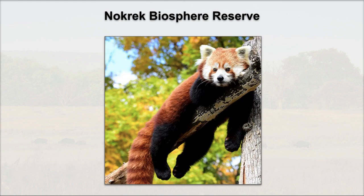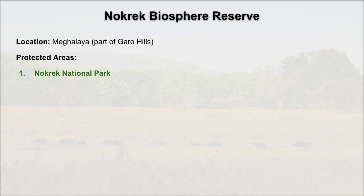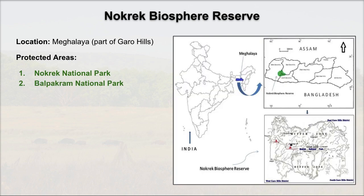Next is Nokrek Biosphere Reserve, whose key fauna is the Red Panda. It is located in Meghalaya, specifically in the Garo Hills area. The protected areas within Nokrek are Nokrek National Park and Balpakram National Park. You can see the location on the map.